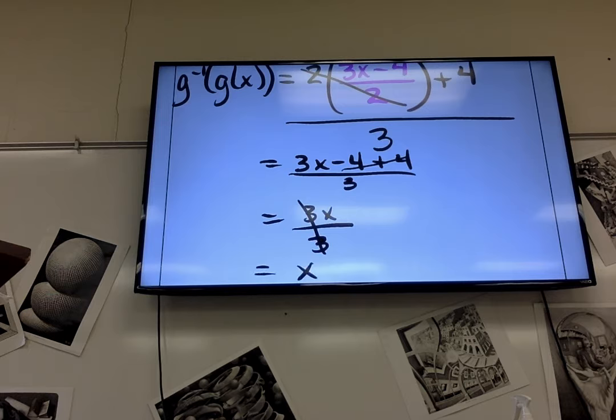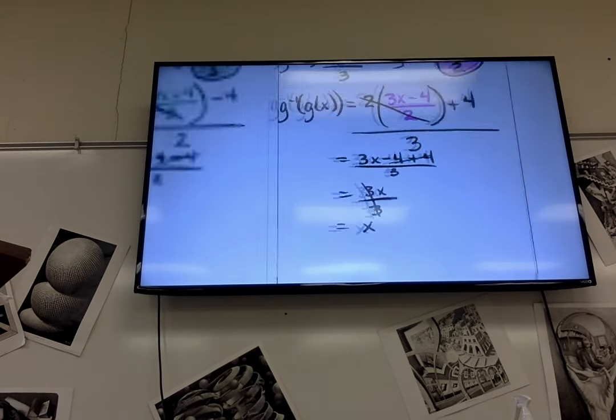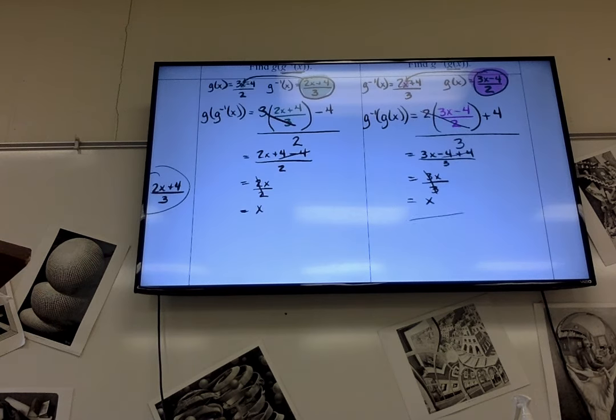The 3's cancel. And you end up with x. So, again, if I do g of g inverse or if I do g inverse of g, for both of them, we got x.